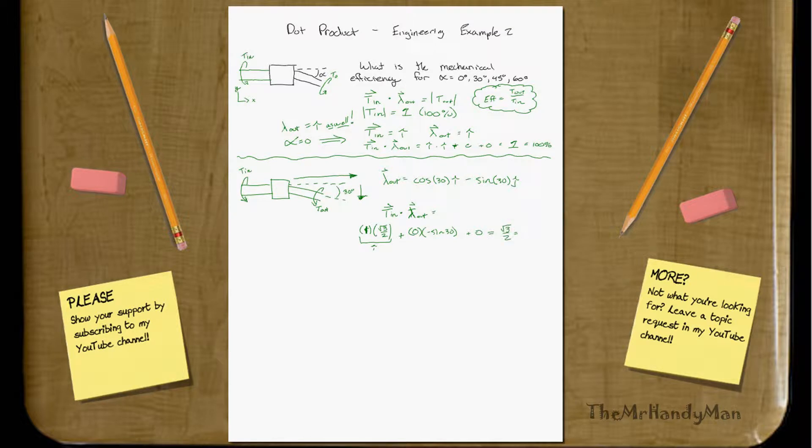Which is also .866, which in terms of efficiency, t_out over t_in, that's going to be .866 over 1, which is 86.6%. Just by having it 30 degrees off, you actually lose near 14% of that rotation into mechanical binding. That's actually going into bending the material, rather than twisting it.